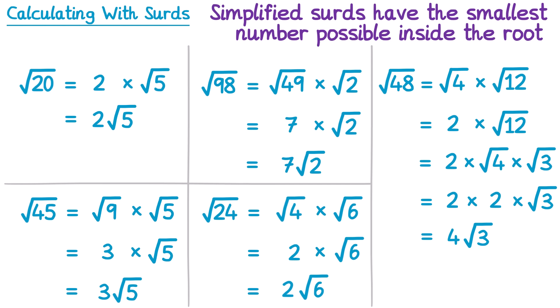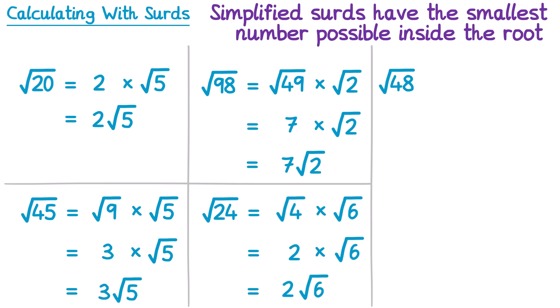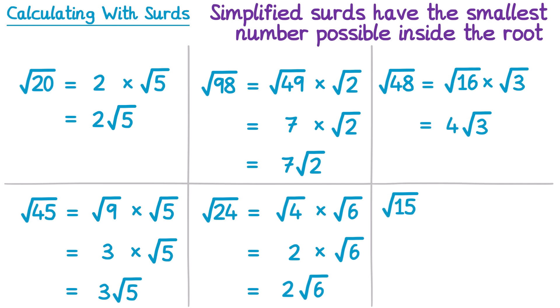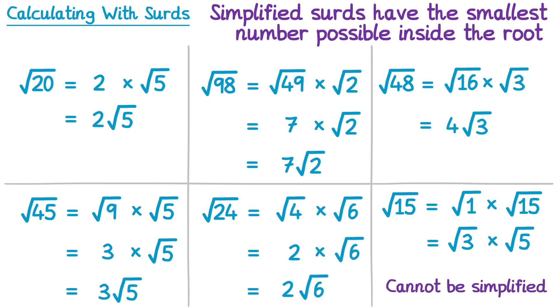The fact that we simplified twice tells us there was actually a bigger square number that went into 48. So the square root of 48 could be split directly into the square root of 16 times the square root of 3. The square root of 16 is 4, and we very quickly get to 4 root 3. The lesson here is to always try and find the larger square number factor. For the square root of 15, the only factor pairs are 1×15 and 3×5 — none of which include a square number, so this surd cannot be simplified.